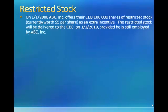Finally, the last example of this type of adjusting entry that accrues an unpaid expense is restricted stock. We chose to discuss restricted stock because it is an example where instead of creating a liability, we instead create an equity account — because it is possible to accrue an unpaid expense through an account that is not a liability. Restricted stock is one of those examples.